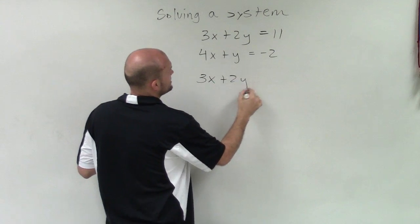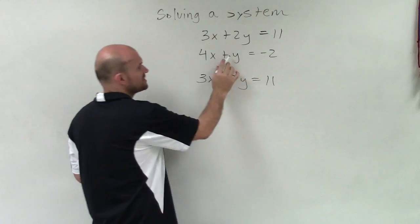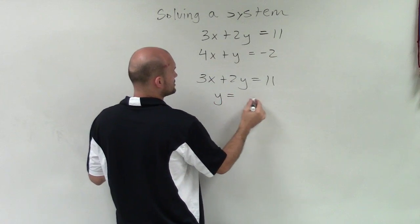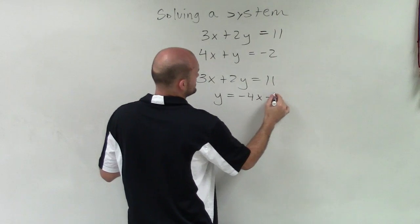To do that, I'm going to solve this for y. So I'm going to subtract 4x on both sides. Therefore, I have y equals negative 4x minus 2.